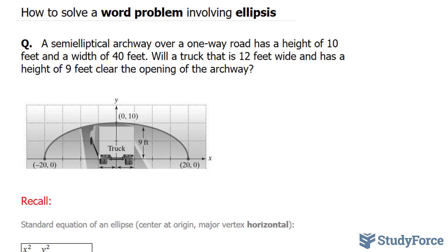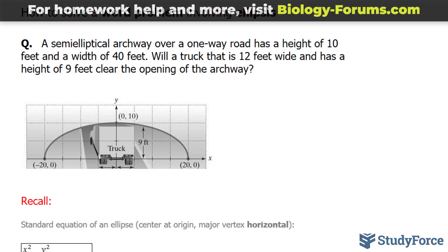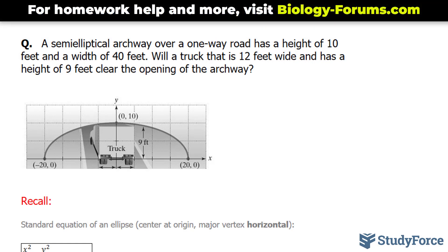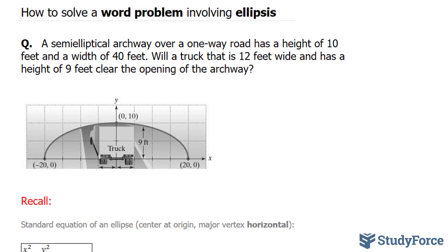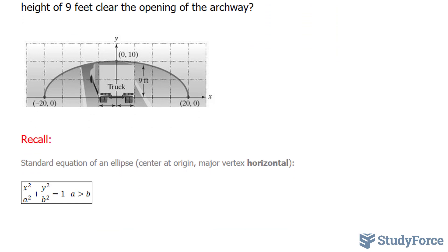We're being indirectly told that the ellipse is longer horizontally than it is vertically. To answer this question correctly, you need to know what the standard equation of an ellipse looks like. Notice that we have two terms — x squared plus y squared — and it's very important that you have the plus in between, otherwise it's a hyperbola.